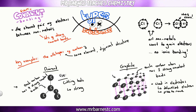The other useful property of graphite is that it has layers. Those layers can slide past each other, and because they can slide past each other they reduce friction — therefore they're really useful as lubricants in cars.